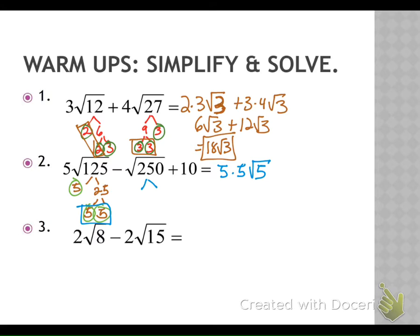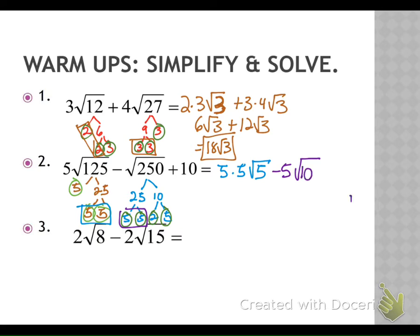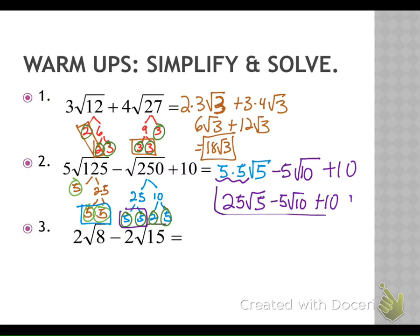Over here we have two hundred and fifty. Factors of two hundred and fifty — twenty-five and ten. Twenty-five goes to five and five. Ten goes to two and five. We're going to box in the ones that have buddies after I circle our leaves. So we have fives that have buddies — five comes out. If it doesn't have a buddy, stays locked up. So we have two times five, which is ten, and then our last part here is plus ten. Five times five for our first part gives us twenty-five square root of five minus five square root of ten plus ten. Do any of those have the same radicals so we can combine? Nope. So we box it in and that's our answer.